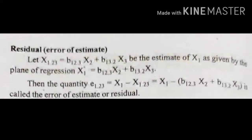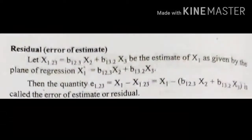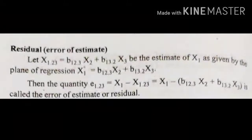The quantity e₁.₂₃ equal to x₁ minus x̂₁.₂₃, that is x₁ minus (b₁₂.₃x₂ plus b₁₃.₂x₃), is called the Error of Estimate or Residual.